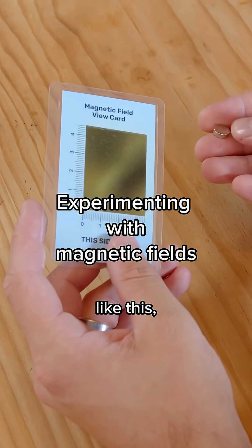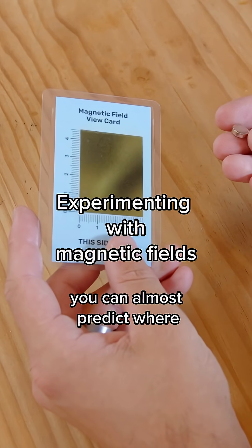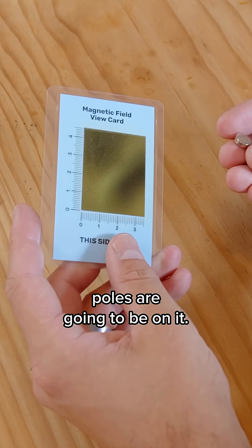Now if I get a normal magnet like this you can almost predict where the north and south poles are going to be on it.